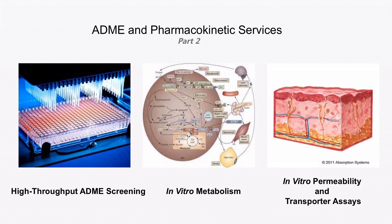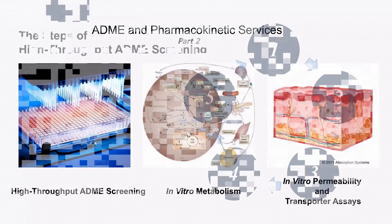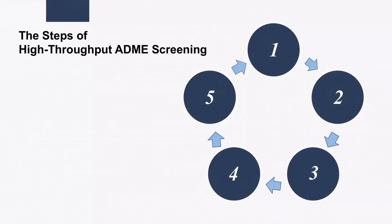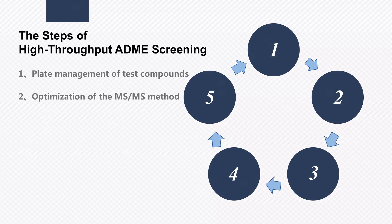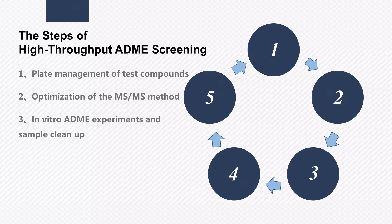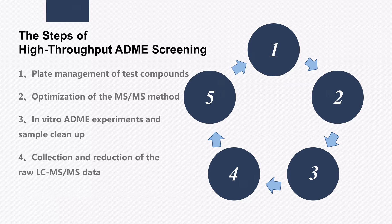Therefore, understanding the ADME properties of compounds is crucial to the drug development process. Our HTS ADME assays can be modified and customized. The process consists of the following five steps: plate management of test compounds, optimization of the MS/MS method, in vitro ADME experiments and sample cleanup, collection and reduction of the raw LC-MS/MS data, and archival of the processed ADME data.